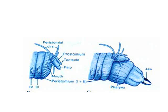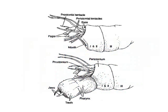Here's another look at the jaw. The upper image shows the head with the jaw retracted, and the lower image shows the pharynx everted with the well-armed jaw.